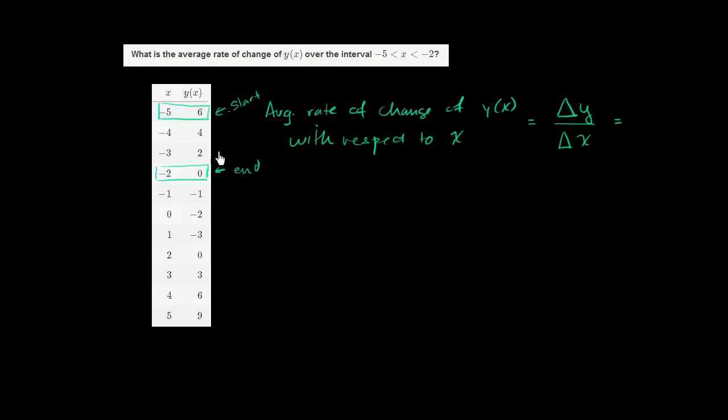And we could have done it the other way around. We would get a consistent result. But since this is higher up on the list, let's call this the start. And this is, the x is a lower value. We'll call that our start. This is our end.